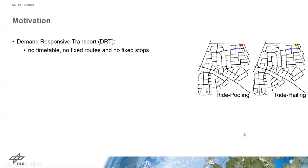What is demand-responsive transport or DRT? It is a transport service with no timetable, no fixed routes, and no fixed stops. As Professor Bogenberger explained before, we have two main types of DRTs. We have shared DRTs or ride pooling, in which the person or request can be shared, and then we have ride hailing or taxi services.